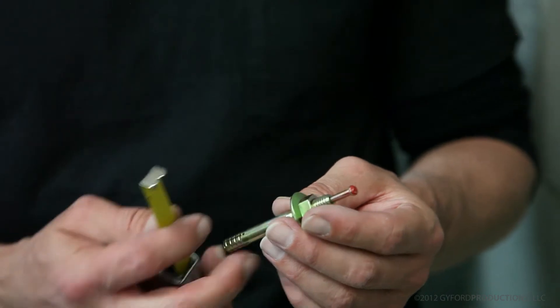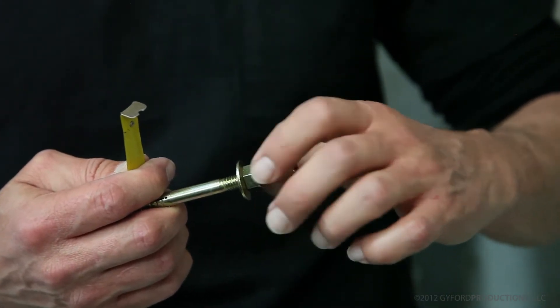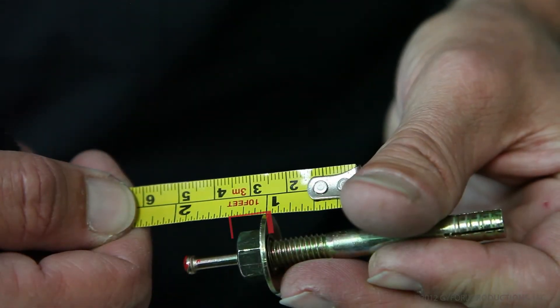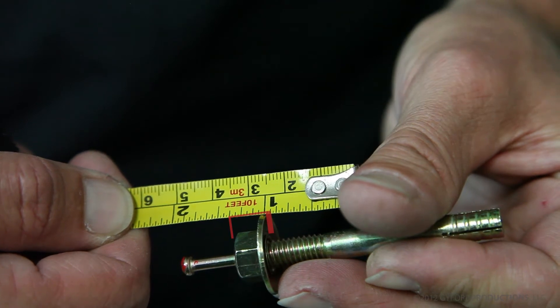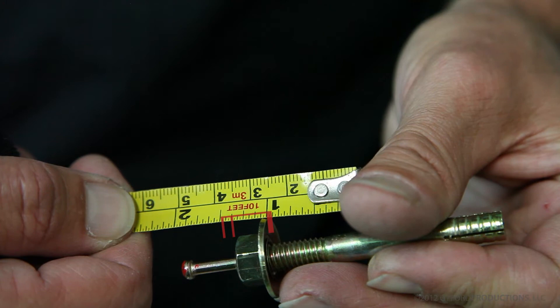Before you place the stud in the hole, set the stud length by turning this nut and measuring the distance from the back of the washer to the end of the thread. The head of the pin will protrude an eighth of an inch, so be sure to factor that into your overall desired length.